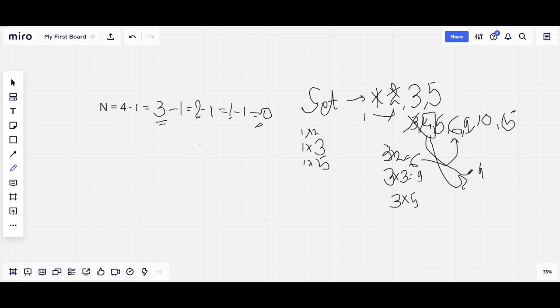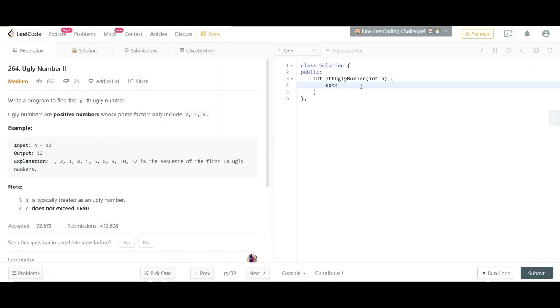First of all, declare a set and we will be taking it as long because there might be a situation when the value would overflow. And add 1 to the set. We will go in the while loop. Now we'll decrement the value of n by 1 and check if n is 0. Then we will be returning the first element.